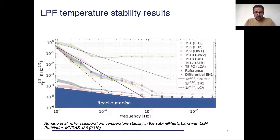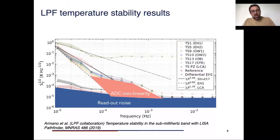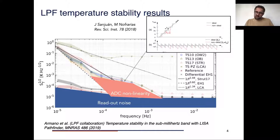The in-flight results of this temperature measurement system show that we reached a noise floor of 10 micro Kelvin per root Hertz roughly, and in the region below one millihertz we detected an excess noise, which was basically due to AC/DC nonlinearities. We already knew about this and it was not so critical for LISA Pathfinder because its measurement band was down to one millihertz.